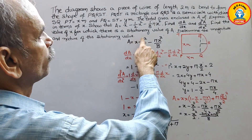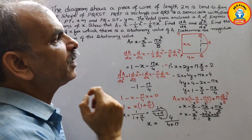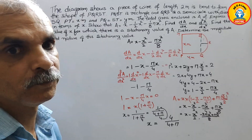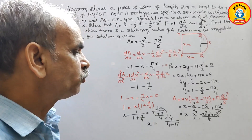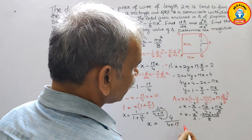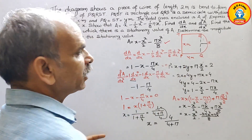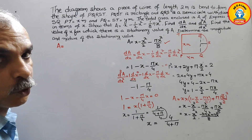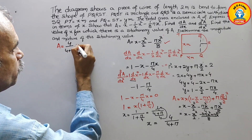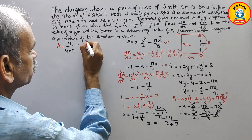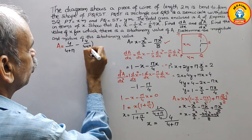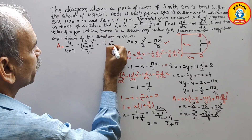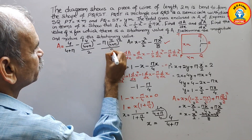For the magnitude, substitute X equals 4/(4+pi) into the area formula. Area equals 4/(4+pi) minus (1/2) times [4/(4+pi)]² minus (pi/8) times [4/(4+pi)]². We need to simplify this expression by working out each term.